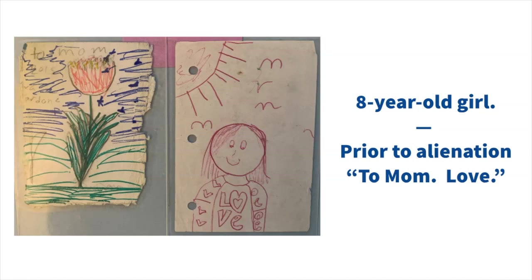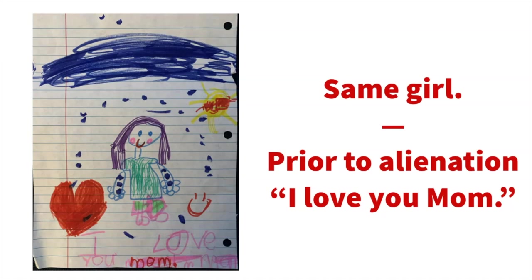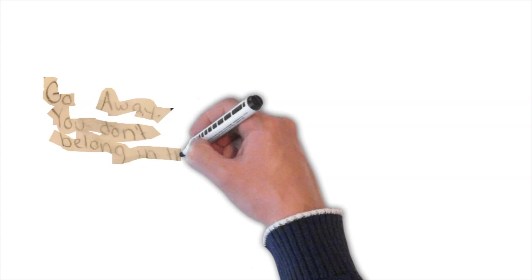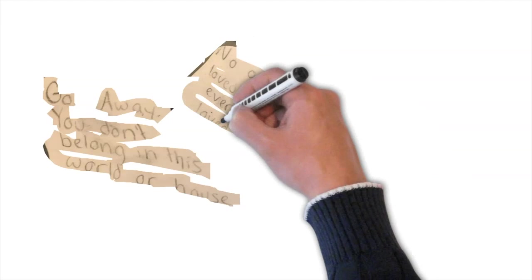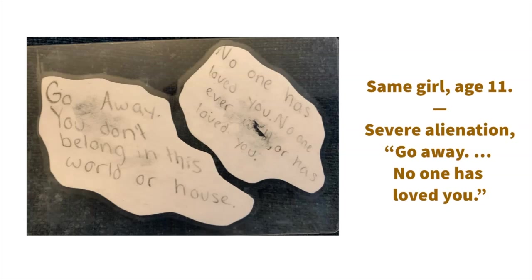An eight-year-old girl, before alienation, to mom love. The same girl before the alienation, I love you mom. Now the same girl, age 11, experiencing severe alienation. Go away, you don't belong in this world or house. No one has loved you. No one ever will or has loved you.